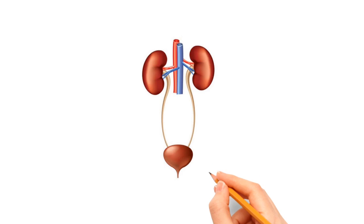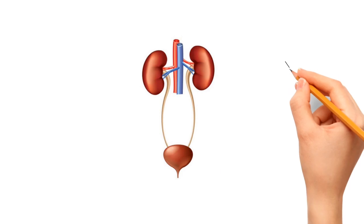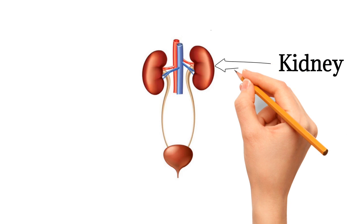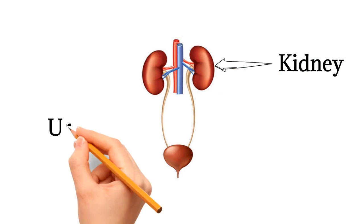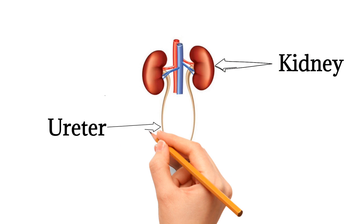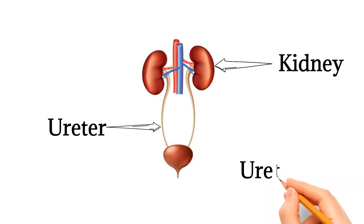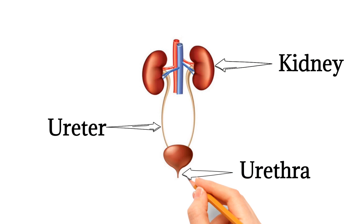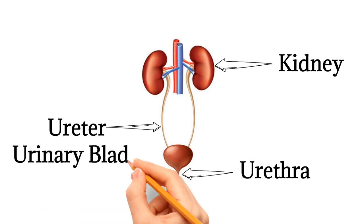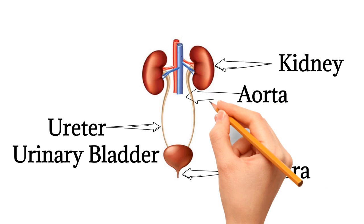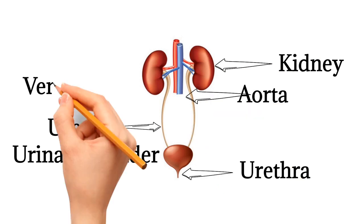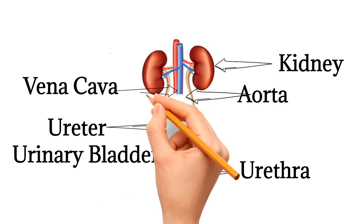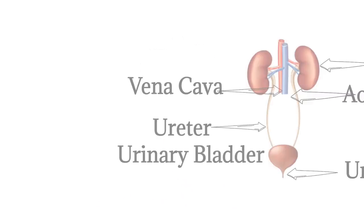In the urinary system, we shall study: first, kidneys; second, ureter; third, urinary bladder; fourth, urethra; fifth, male urethra; sixth, female urethra; seventh, nephrons; eighth, function of the kidneys; ninth, formation of urine; and tenth, diseases regarding the urinary system.